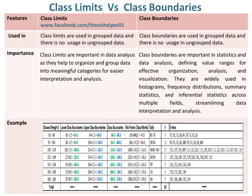In the example, you can see class weights which are class limits given in the first column. Compute lower class boundaries by subtracting 0.5 from lower class limits to get the second column. In the third column, add 0.5 to upper class limits to get upper class boundaries. The fourth column contains the class boundaries. You can fill the rest of the frequency distribution table by making columns for midpoints, tally, frequencies, and entries respectively.